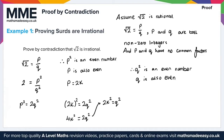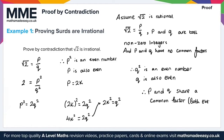Now if Q is also even, we have a problem. We assumed P and Q have no common factors; however, as they're both even, they will share a common factor of 2. This contradicts our initial assumption. Therefore, root 2 is irrational. This proves root 2 is irrational.